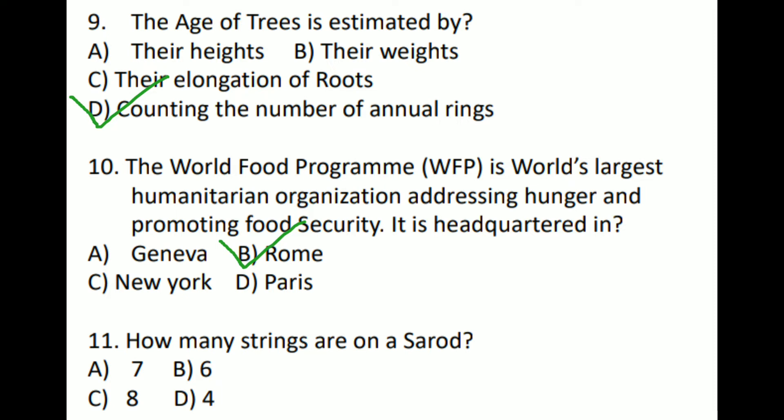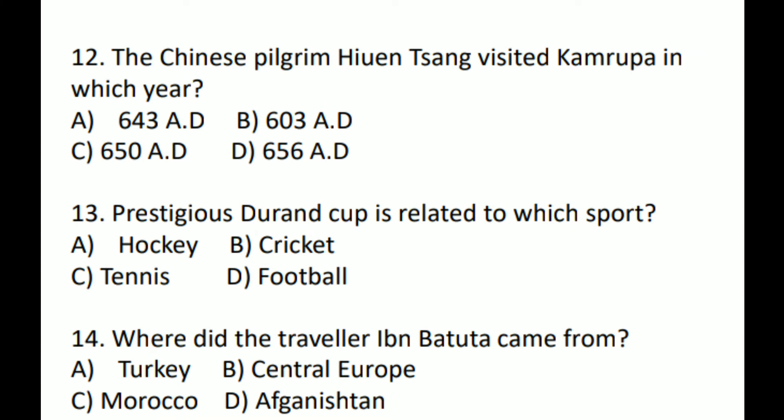Option D — Sorry. Next question: The Chinese pilgrim Hiuen Tsang visited Kamrup in which year? The answer is Option A — 643.